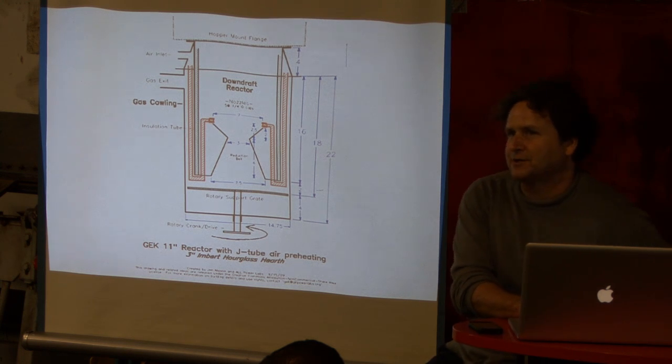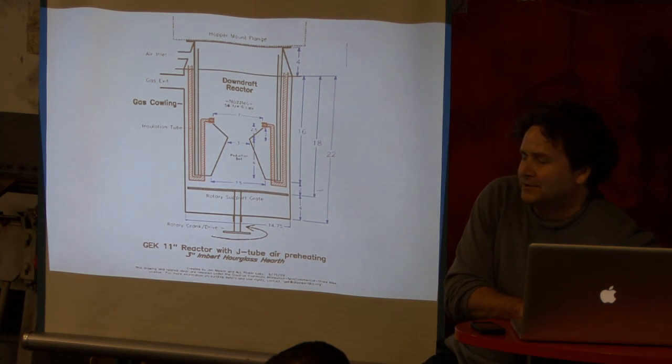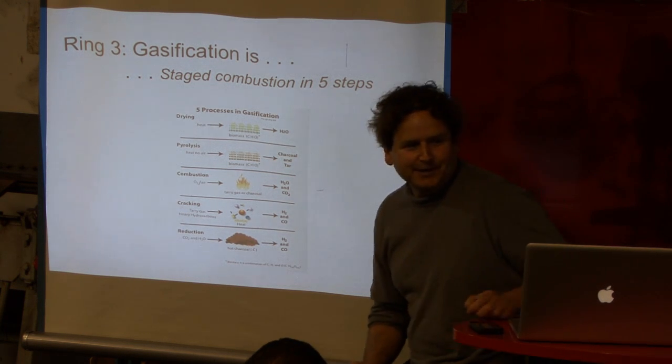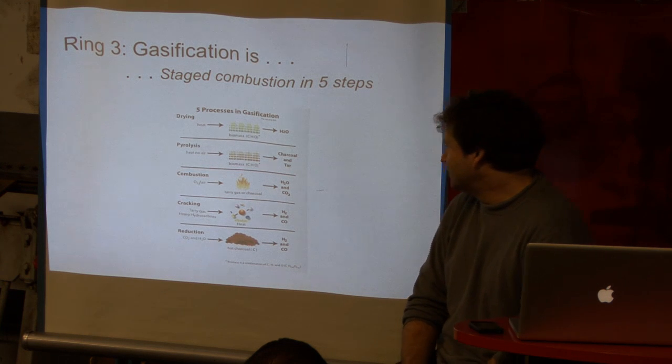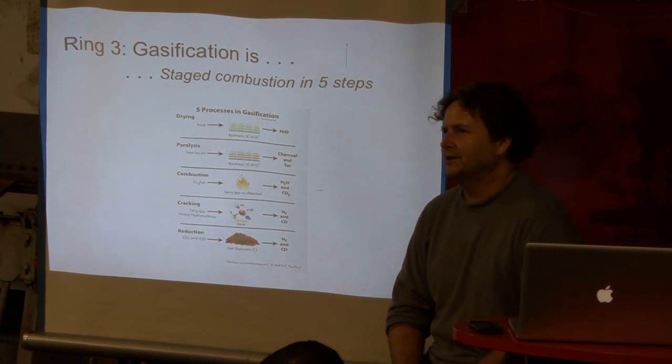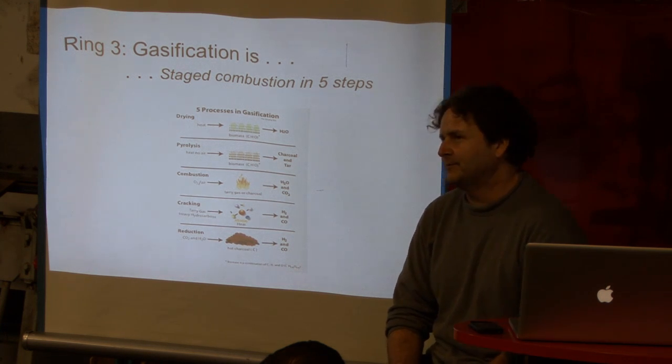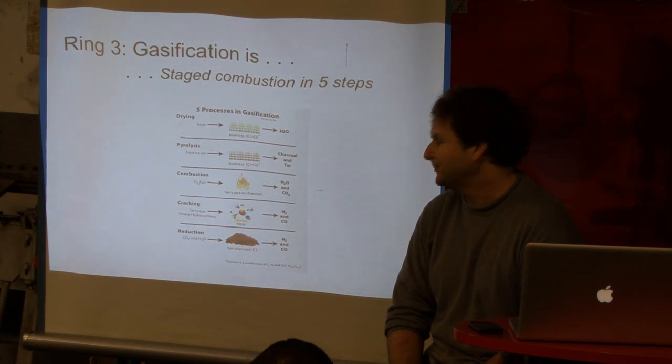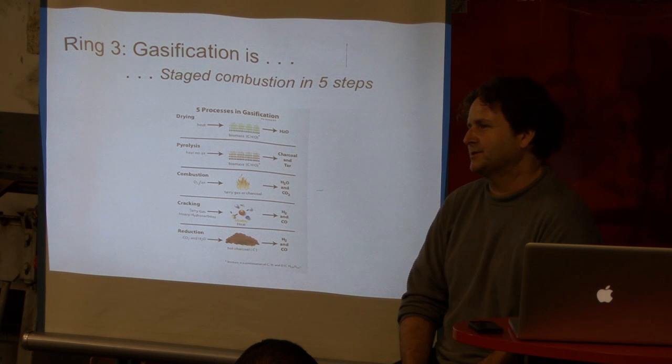So that's the four processes of gasification: drying, pyrolysis, combustion, reduction. The problem is that's wrong. That's actually not how it works. Or, well, it does work like that, it's just not quite enough. There's more things going on. Ring three: gasification is staged combustion in five steps. The new step here is never called out in gasifiers, which is the problem because it's actually a more important route for creating your alkane, hydrogen, and carbon monoxide than reduction. That fifth process is cracking, cracking the tar and gases.